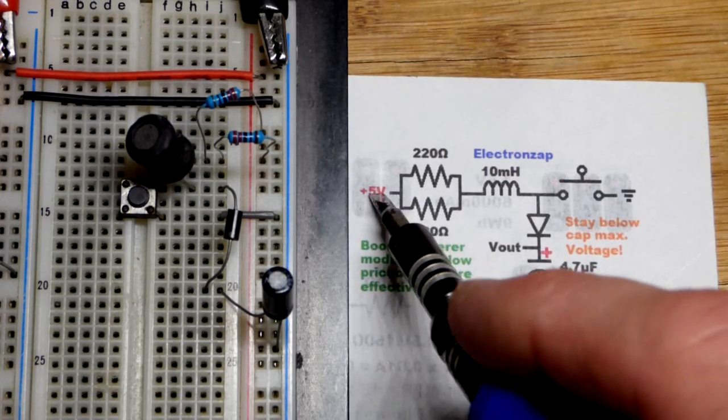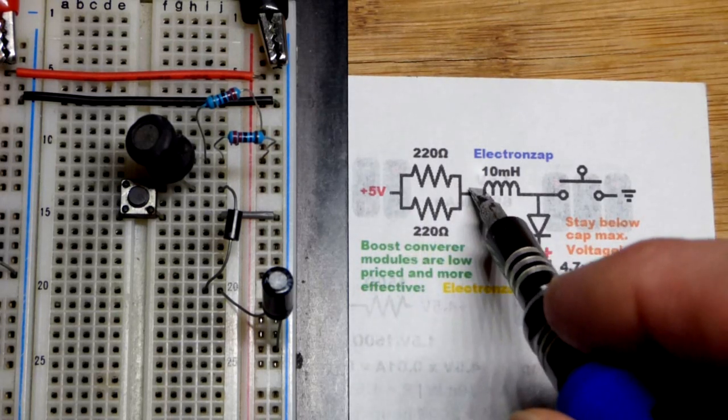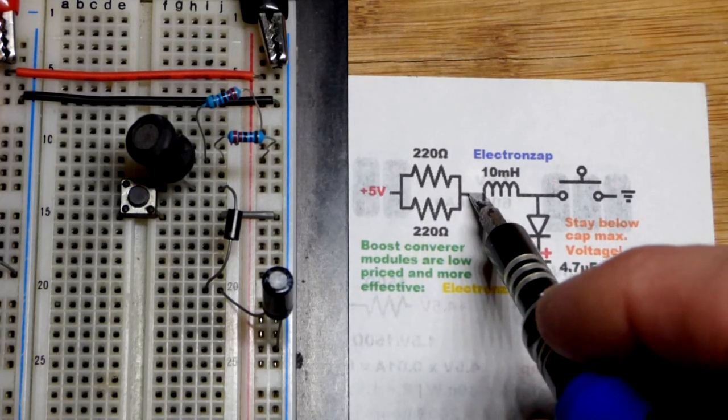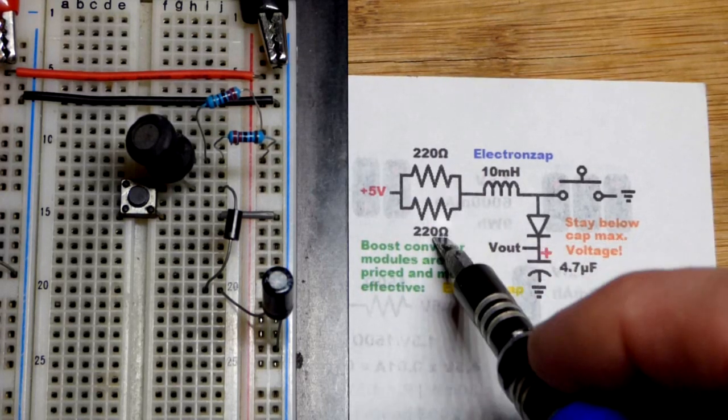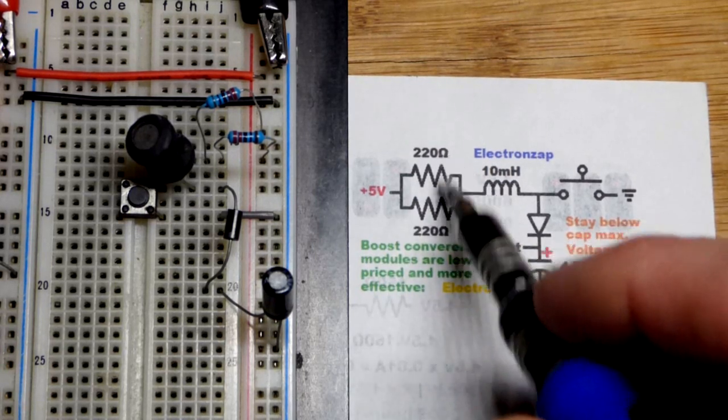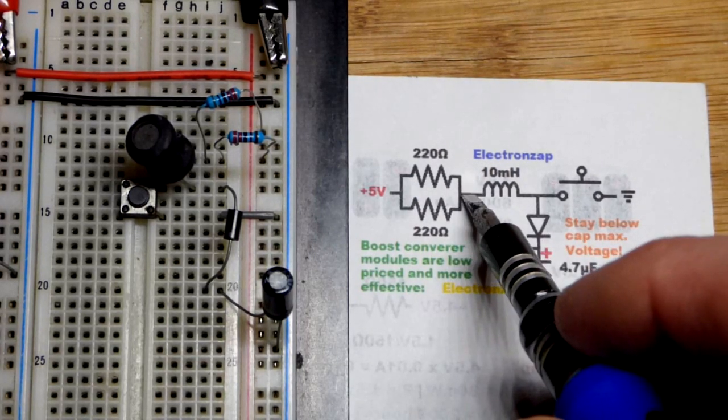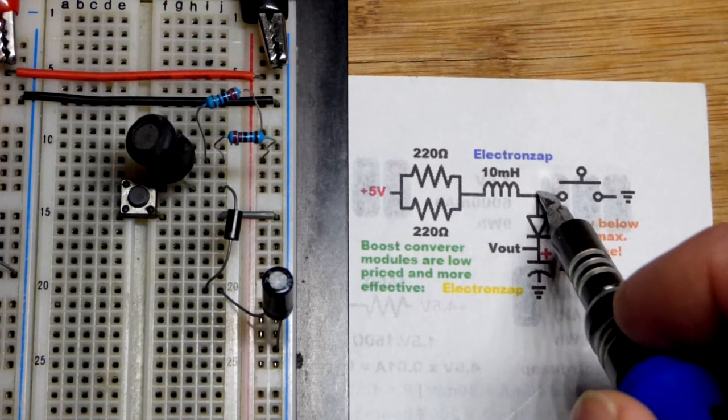Let's follow the path here. We've got positive 5 volts and two resistors in parallel because the more current, the more effective this will be. Two of them in parallel is like a 110 ohm resistor. You get twice the current, but the resistors don't get any hotter because there's two of them, each passing current independently. Then a 10 millihenry inductor.